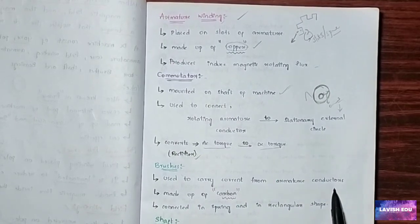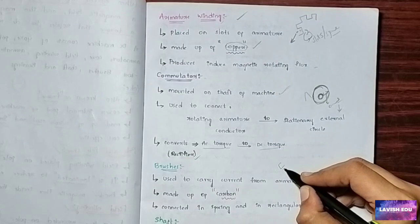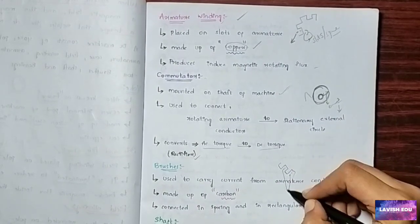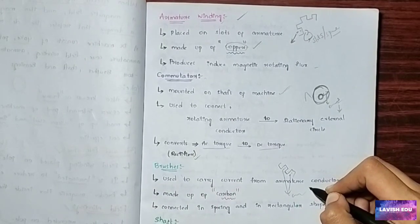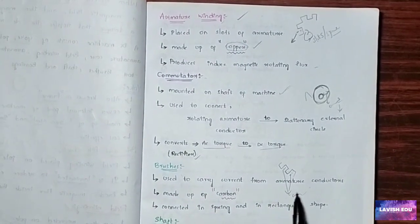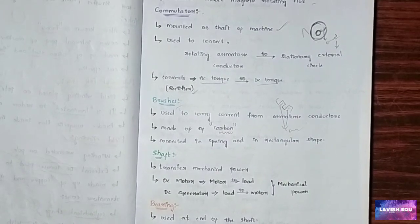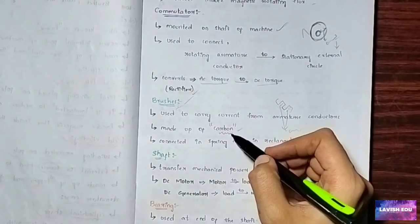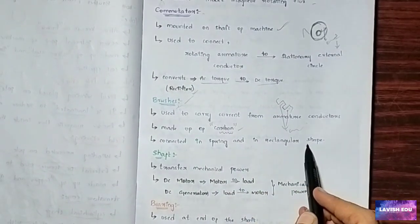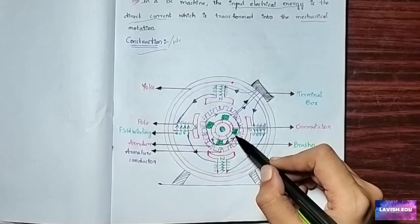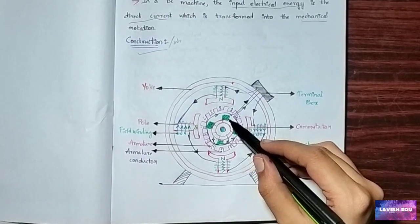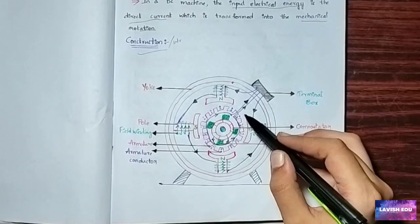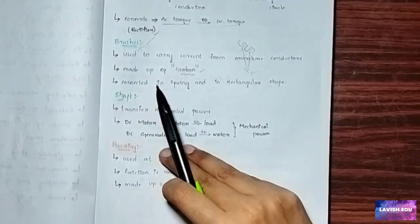Next, why do we use brushes? Brushes carry current from the armature conductors — shown as purple dots. It is not easy to carry current directly, so we use brushes to carry the current. The brushes are made up of carbon. They are connected by a spring and are rectangular in shape — you can see the rectangular green shapes in the diagram. The purple lines represent the current carried by the brushes.